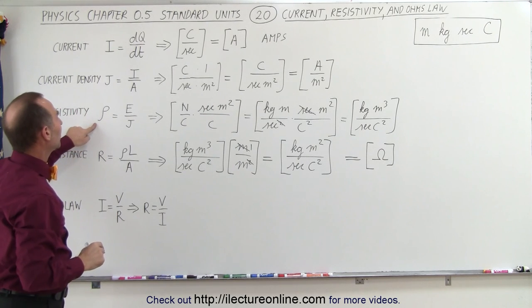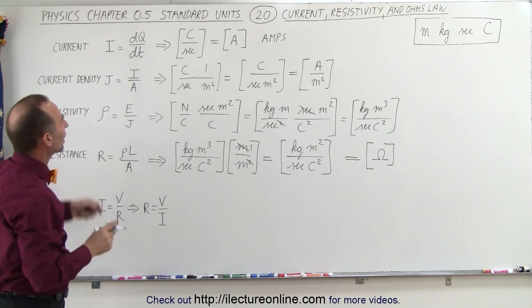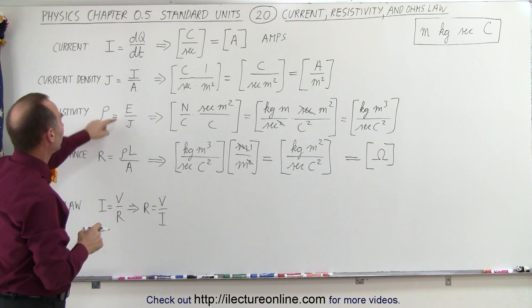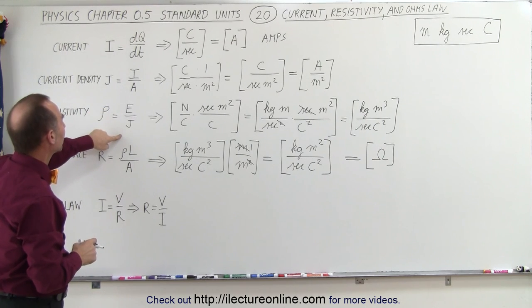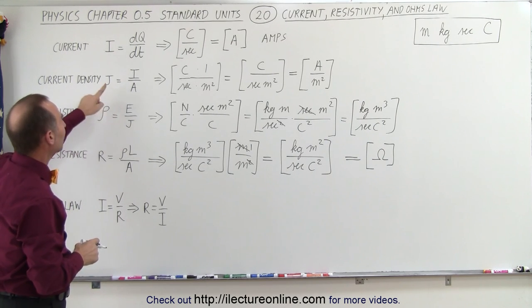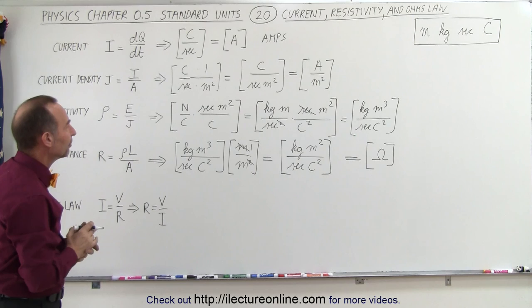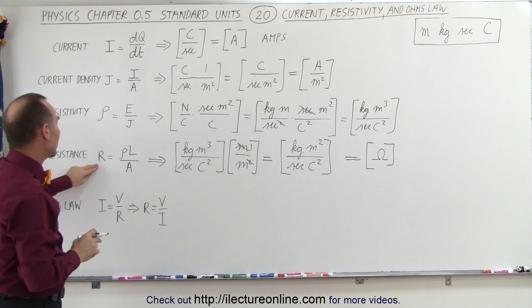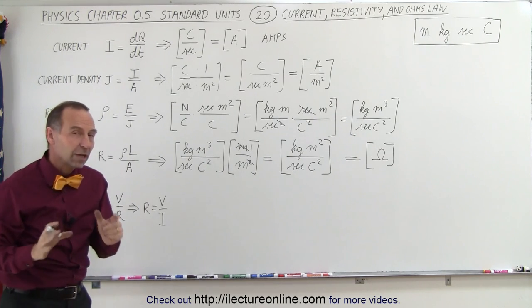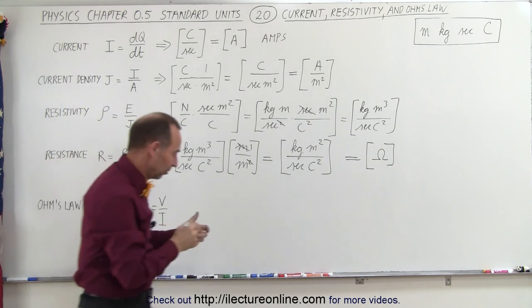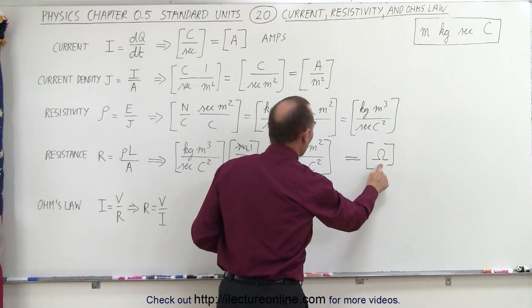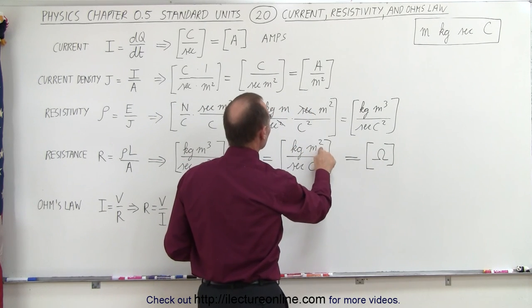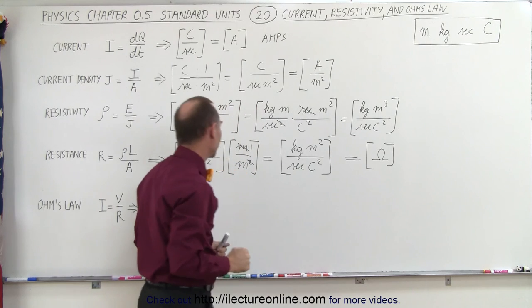What about resistivity? That would be Newtons per Coulomb for the electric field divided by the current density, which is amps per square meter. But it's probably better to look at resistance, since the common unit for resistance is ohms. Ohms is defined as kilograms meters squared per second per Coulomb squared.